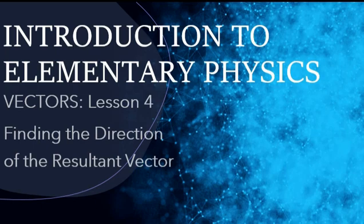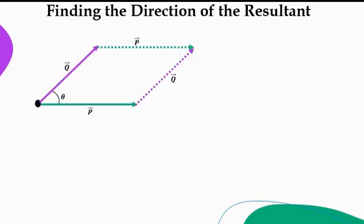Here we are talking about finding the direction of the resultant vector. Recall from lesson three part A that we said that from the parallelogram law of vectors, if you have two vectors inclined at an angle with respect to each other, the system can be developed into a parallelogram as we are seeing.